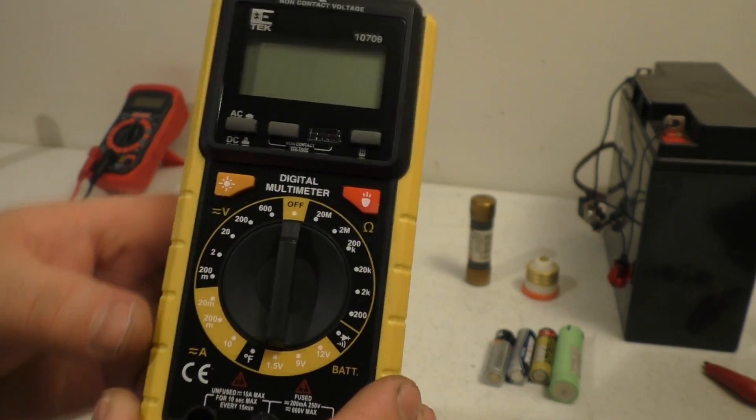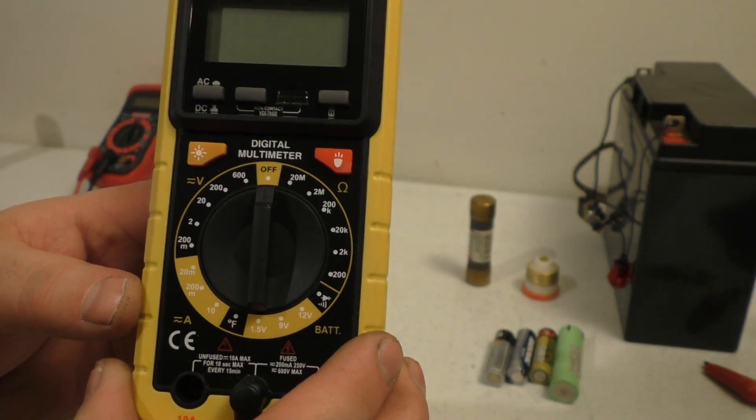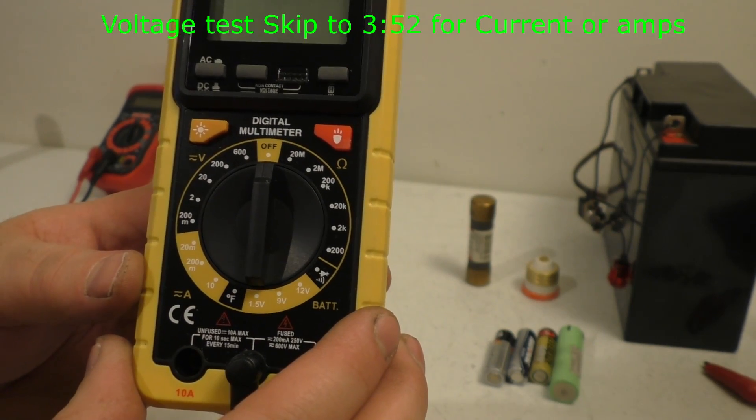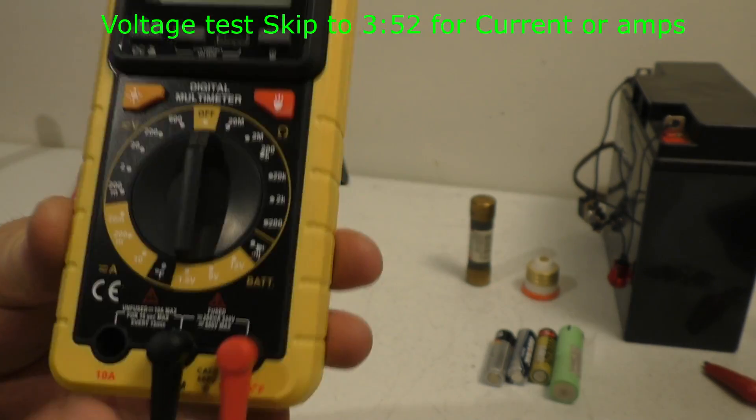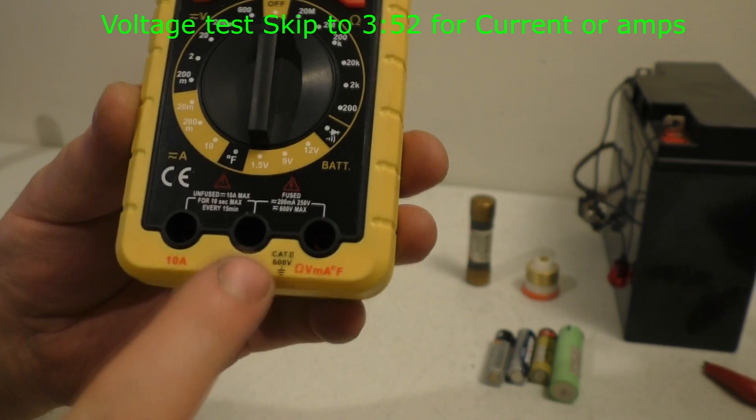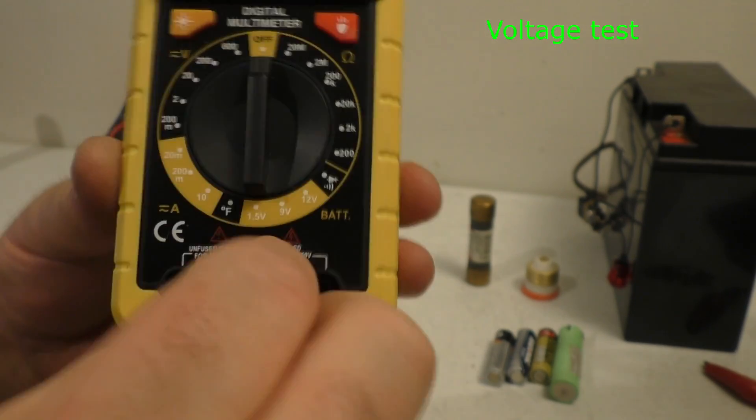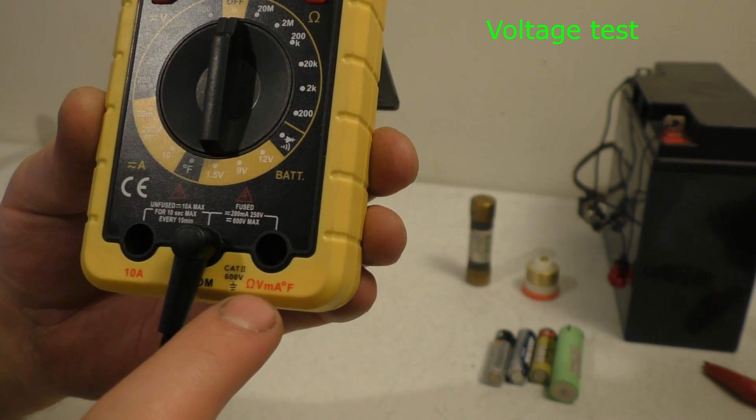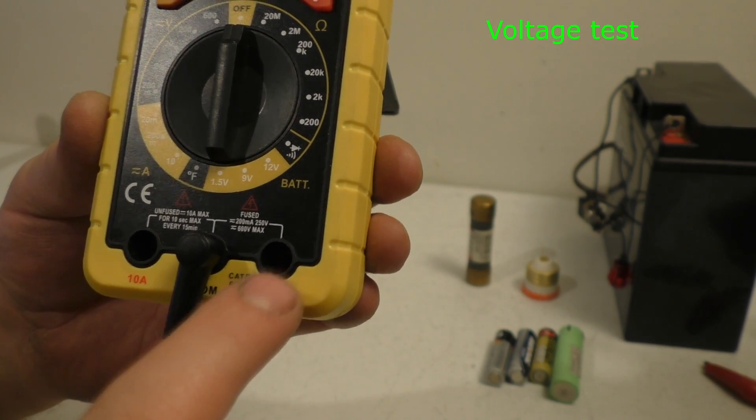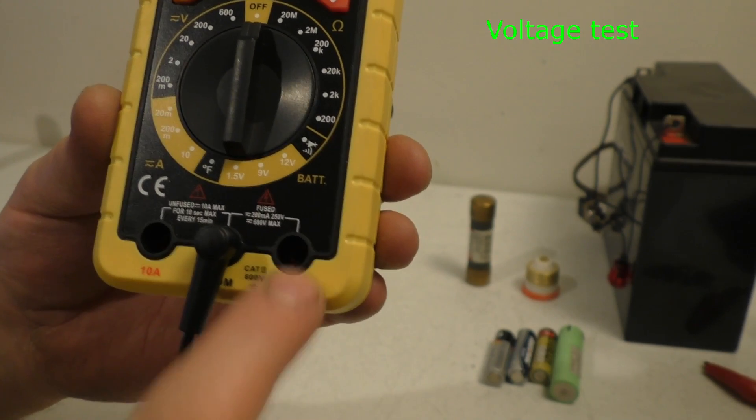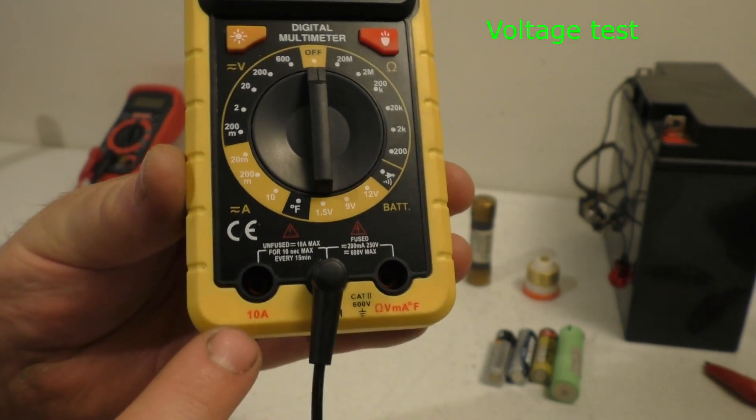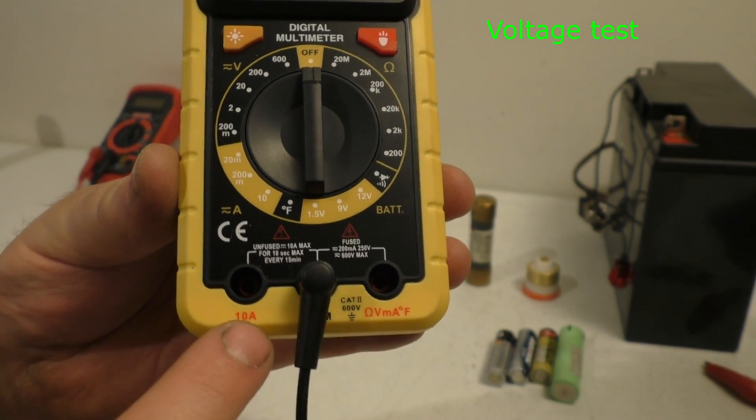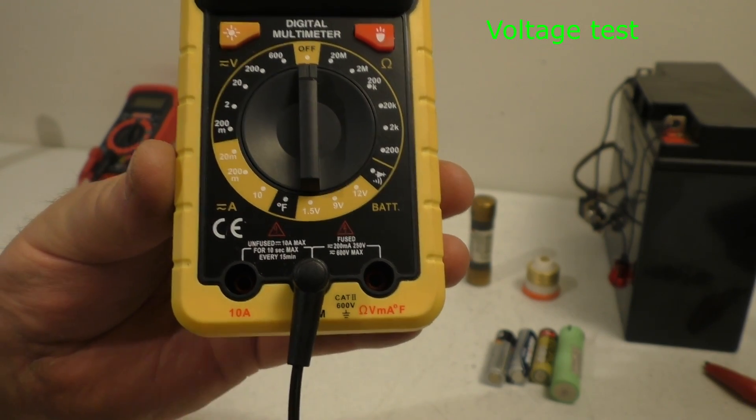First step is we're going to end up testing a battery, like a 1.5 volt battery. On every multimeter, you have your negative, which is com. And if you're testing volts and resistance or milliamps, you'll have it on one side. And the other one is just testing current, up to 10 amps of current, which we'll get into that.